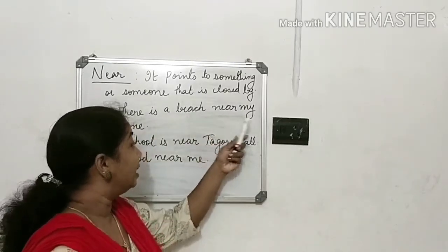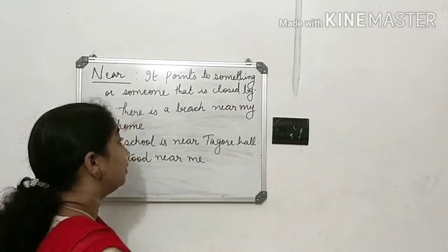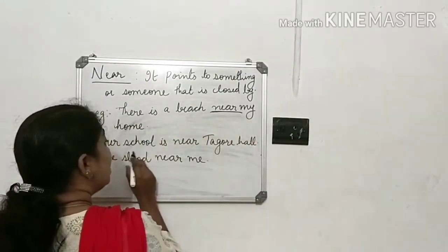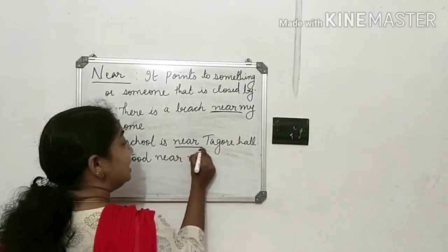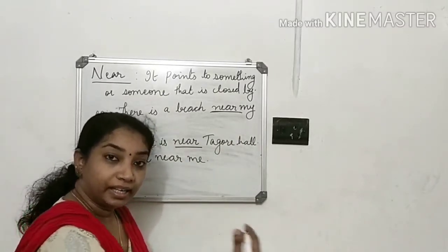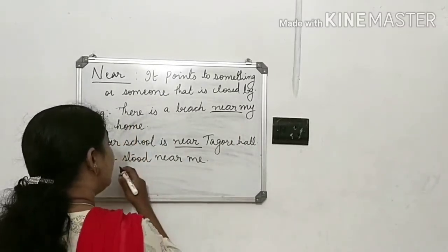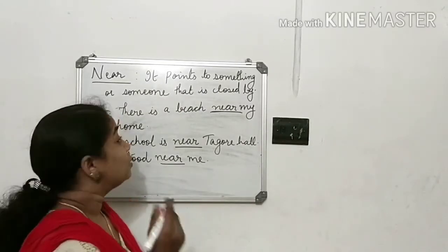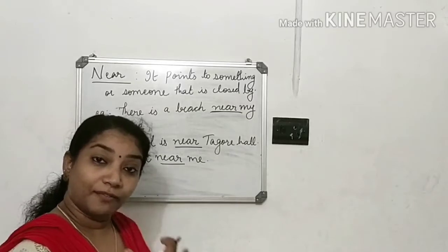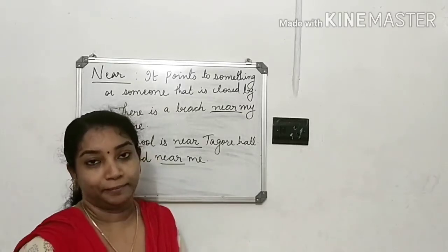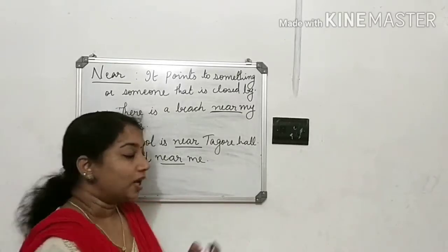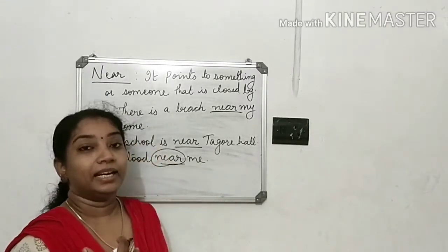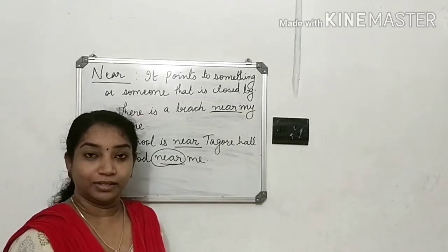There is a beach near my home — here 'near' is a preposition. Our school is near Tagore Hall. She stood near me. So 'near' points out something or someone that is close by. So the prepositions we have studied so far are 'at' and 'near.